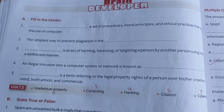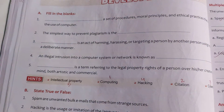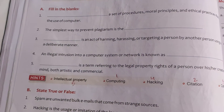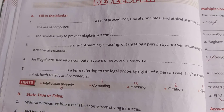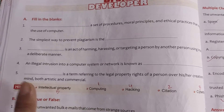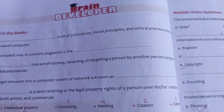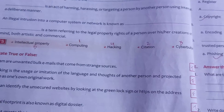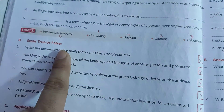Intellectual property kya hoti hai — jo kisih insaan se related hoti hai woh uska right hai, kyunki usne apna mind, artistic, and commercial, jitni bhi chizay hain unko spend kiya hai.